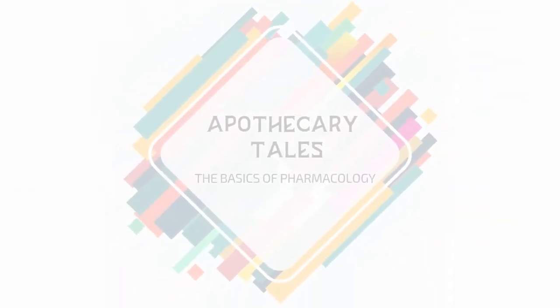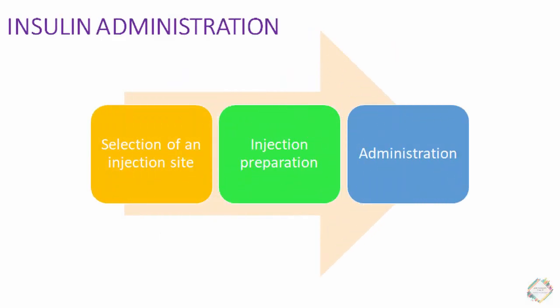Welcome everyone. Today I'll be talking about insulin administration. In the previous video we discussed insulin and its analogs. Insulin administration mainly involves three processes: first, selection of the injection site; second, injection preparation; and third, administration. Selection of an injection site is very important because the dose administered should be properly absorbed. Injection preparation is required to avoid any errors during preparation.